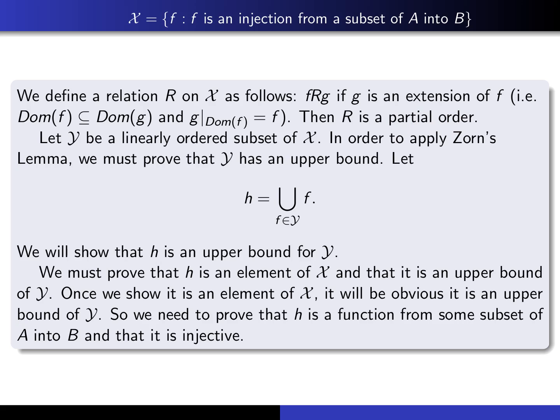The claim is that R is a partial order, and the proof is simple. Reflexivity: every function is an extension of itself. Anti-symmetry: if F is an extension of G and G is an extension of F, then F and G must be identical. Transitivity: if G is an extension of F and H is an extension of G, then H is also an extension of F.